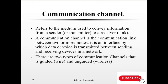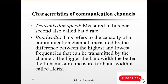Communication systems are of two types: a wireless communication system, known as the unguided, and a physical wired communication system, known as the guided. Under characteristics of the communication channel, we have transmission speed, measured in bits per second, also known as baud rate. Then bandwidth — measured in hertz — is the amount of data that can be carried by the channel with a given frequency.